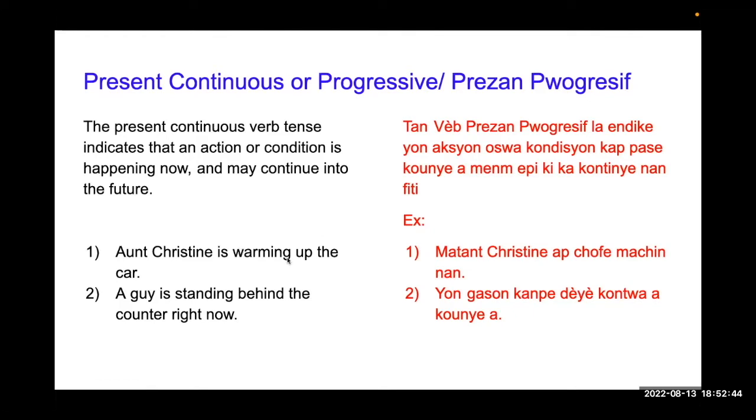Par exemple, Aunt Christine is warming up the car. Ma tante Christine ap shofe mashin nan. Sa vedike nan mou maman pale avek ou ala, ma tante Christine li menm lap shofe mashin nan. A guy is standing behind the counter right now. Yon gason kampe deye kontwa a kounye a. Se ke ou itilize tan present progressive la pou fo konnen ke bagay la la fete nan mouman menm pandan wap pale ya.